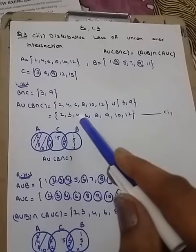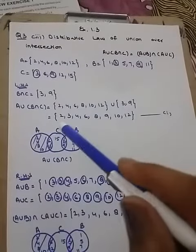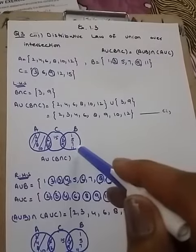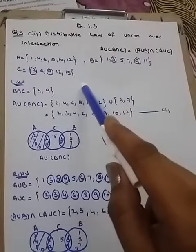Okay girls, we had already done this Venn diagram in part two and part one as well. Why? Because the elements are same, the sets are same.